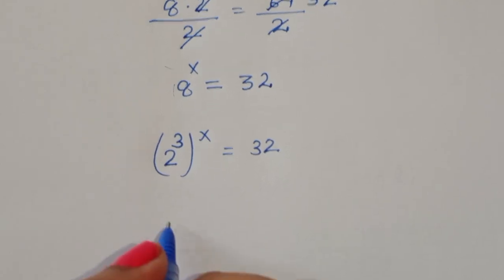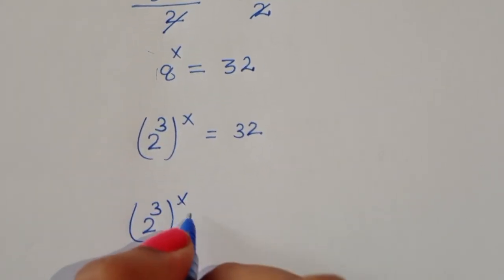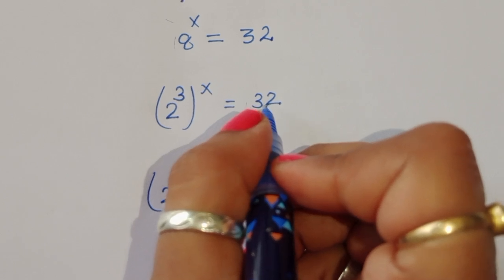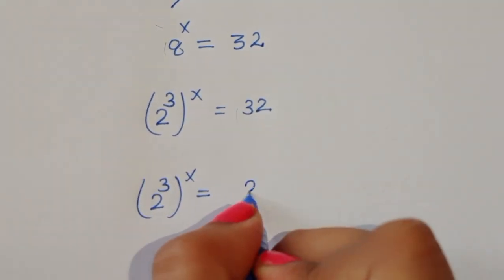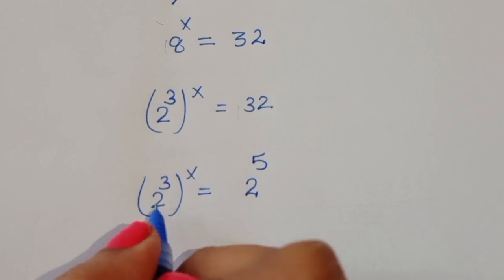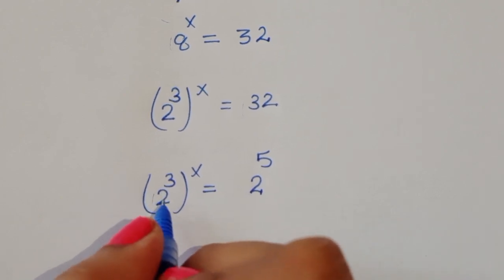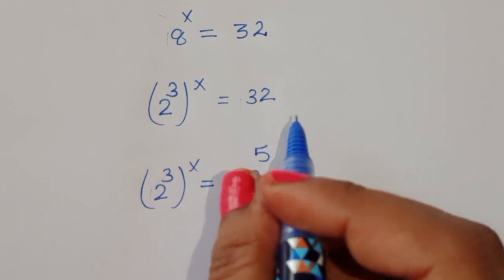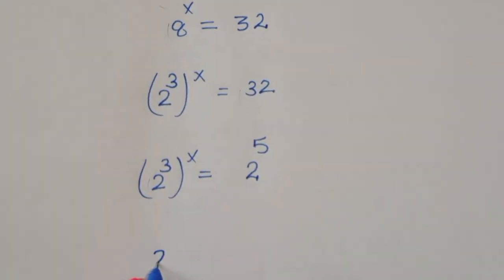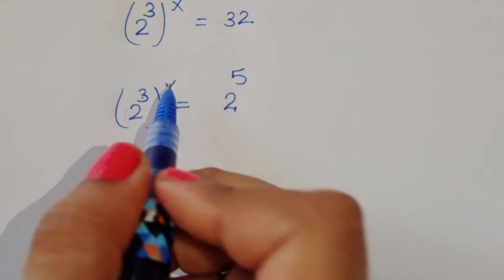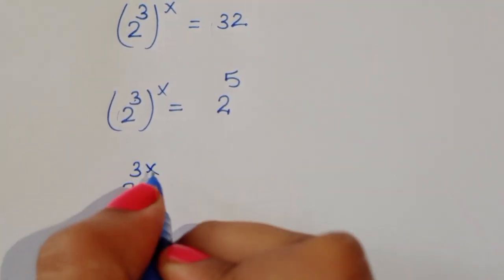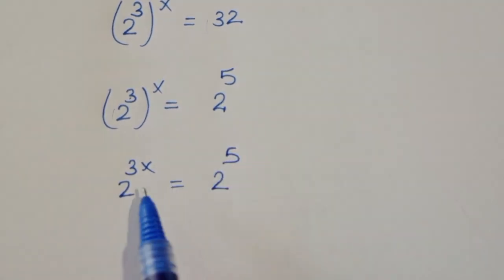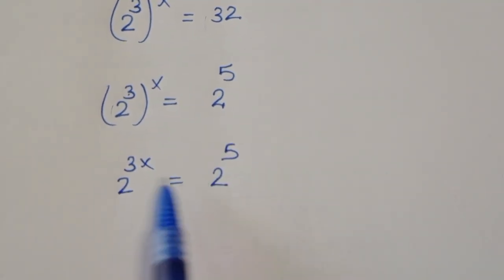We convert 8 into power form: 8 is 2 cubed, so 2 power 3, all raised to x, equals 32. And 32 in power form is 2 power 5. So we have 2 power 3x equals 2 power 5.